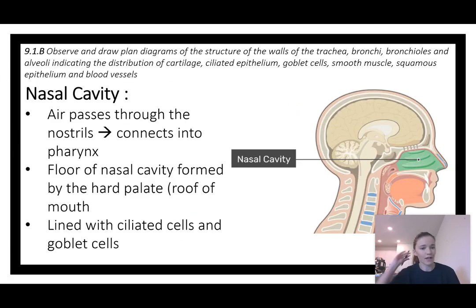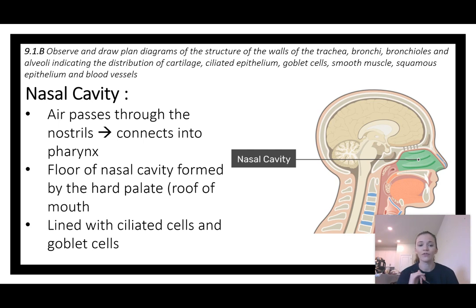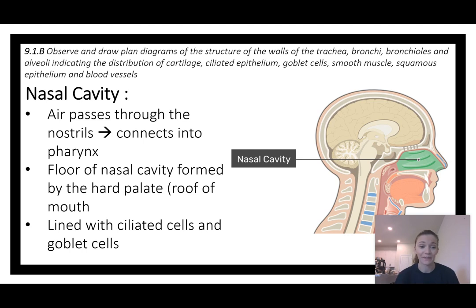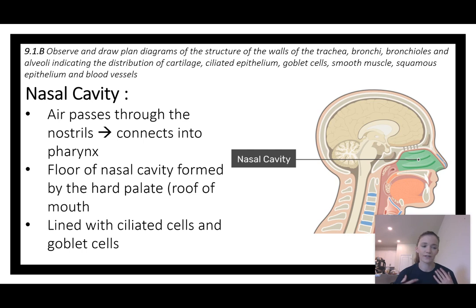Starting at the top: your nasal cavity — air passes through your nostrils and connects to the passages in the back. The floor of your nasal cavity, the sinus cavity, is lined with ciliated cells and goblet cells. The cilia — little finger-like extensions — help sweep mucus, debris, and dust down into your pharynx so you swallow it.